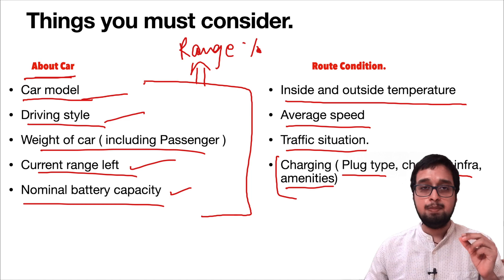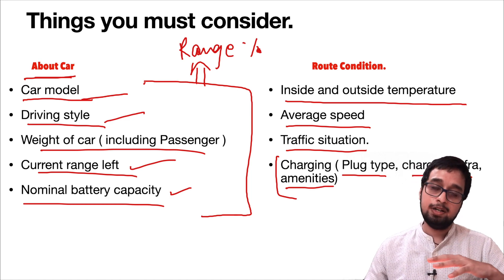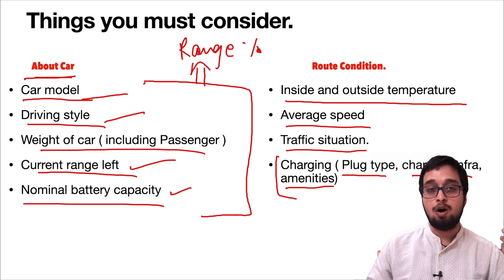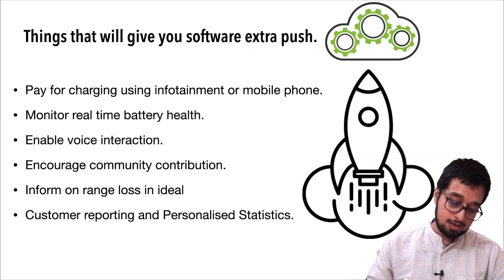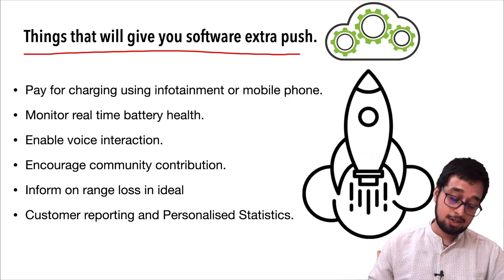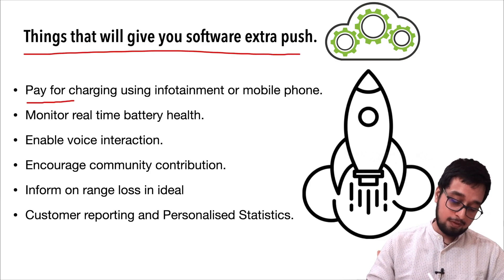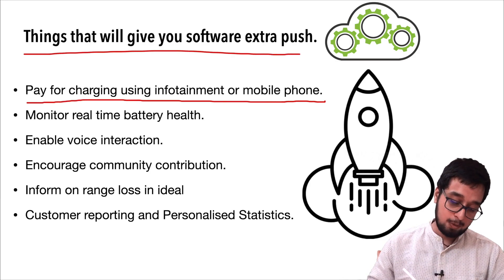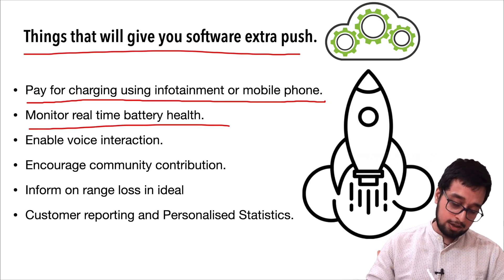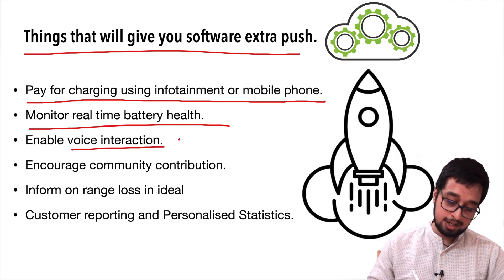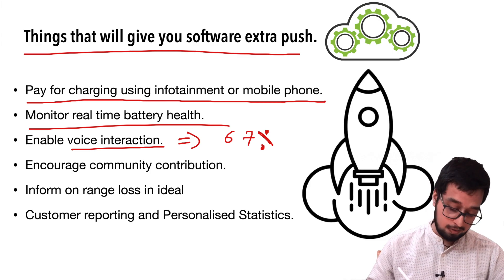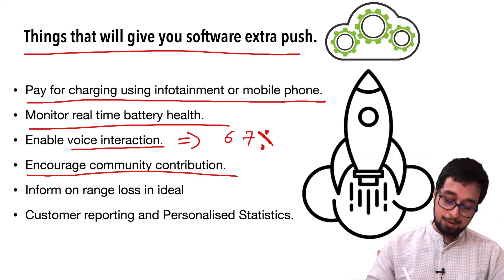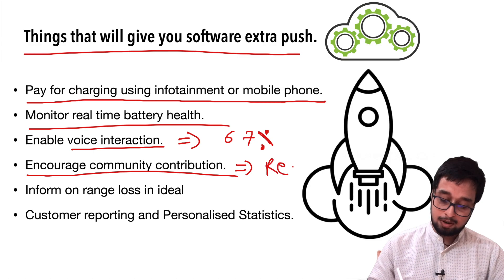While ending this video, I want to give a few tips that can give your software an upper hand over the EV planners already in the market. First is paying for charging using your infotainment system and mobile phone. Second is monitoring real-time battery health. Third is voice integration, which is required by 67% of people according to market survey. Fourth is encouraging community contribution, which will help in real-time monitoring.